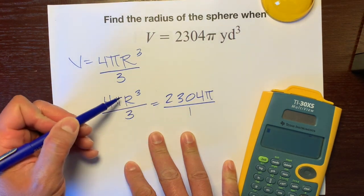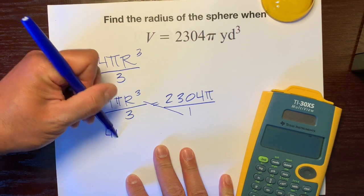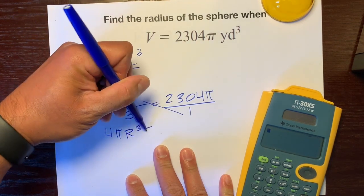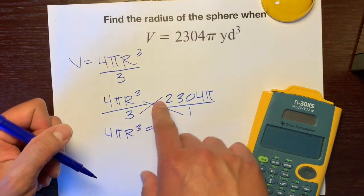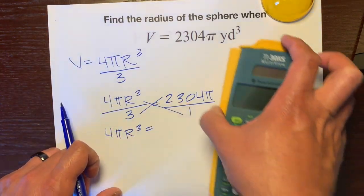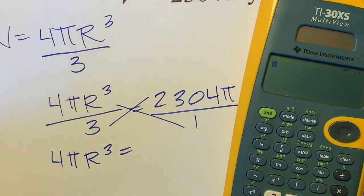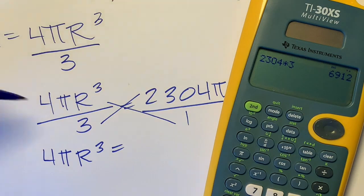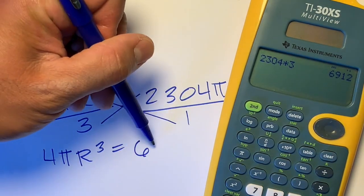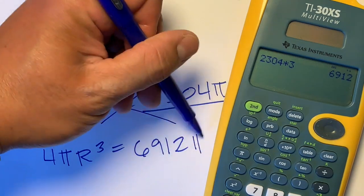So this times this would just be 4πr³ equals 3 times 2,304π. Let's use our calculator. 2,304 times 3 is 6,912, and don't forget that π.